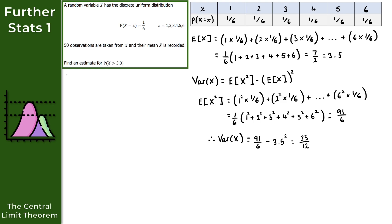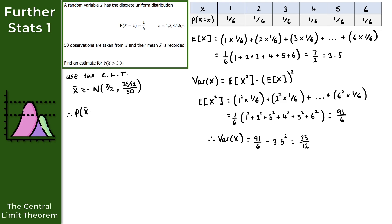Now let's use the central limit theorem. Using the CLT, the sample mean x bar will be approximately normally distributed with parameters: mean equal to 7 over 2 (or 3.5), and variance equal to the variance of x divided by the sample size — so 35 over 12 all over 50. What we want is the probability that the sample mean x bar is strictly greater than 3.8.